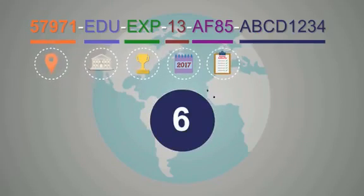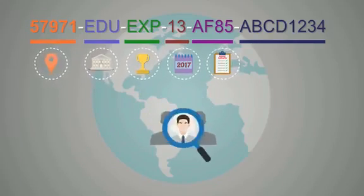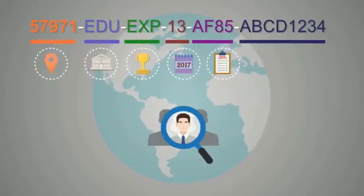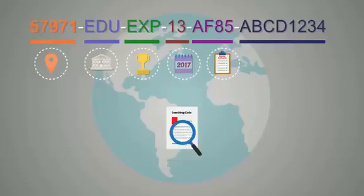Part 6 consists of non-repeatable unique 8 fields — 4 letters and 4 numbers — representing the ISC unique searching code.